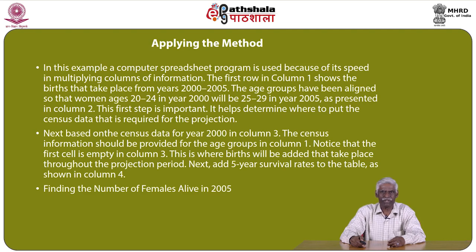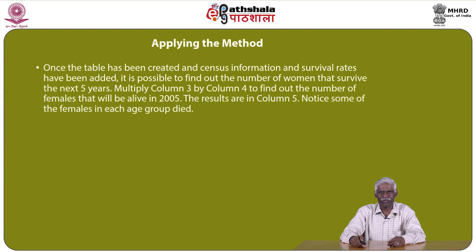Next, add 5-year survival rates to the table as shown in column 4. Once the table has been created and census information and survival rates have been added, it is possible to find the number of women that survive in the next 5 years. Multiply column 3 by column 4 to find the number of females alive in 2005. The results are in column 5. Notice that some females in each group are no more.